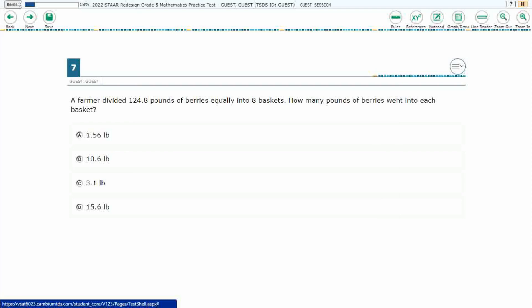If you haven't done so already, please go ahead and take a moment to pause the video, work this problem out on your own, unpause it, and we will look at our answers together. We've got a farmer dividing 124.8 pounds of berries equally into 8 baskets. How many pounds of berries went into each basket?